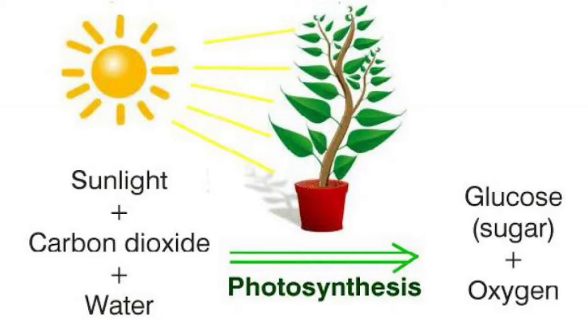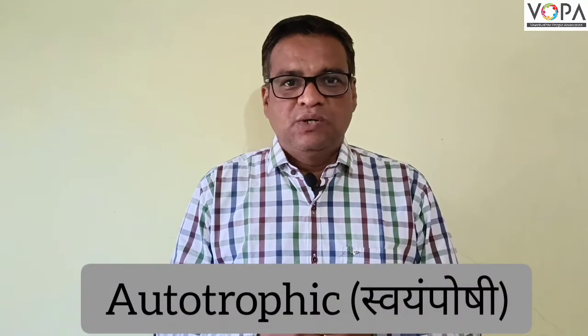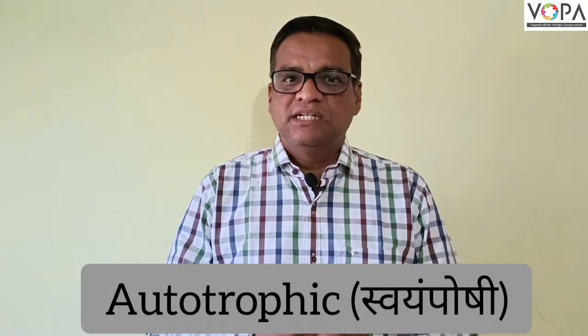Abiotic factors include carbon dioxide and solar energy. The consumers are primary consumers, secondary consumers, and tertiary consumers.